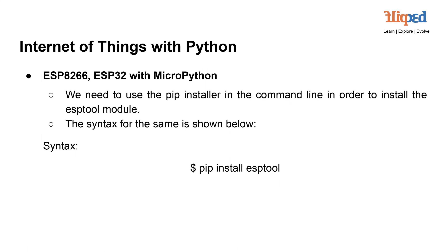To use MicroPython on ESP8266 or ESP32, you can install the ESPTool module using the pip installer in the command line. The syntax for installing the module is: pip install esptool. This command will download and install the ESPTool module, which is necessary for flashing MicroPython firmware onto the ESP8266 or ESP32 microcontroller. Once installed, you can proceed with the MicroPython installation process on your chosen microcontroller.